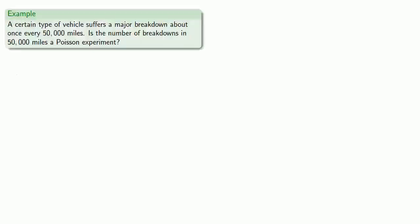For example, a certain type of vehicle suffers a major breakdown about once every 50,000 miles. So is the number of breakdowns in 50,000 miles a Poisson experiment?